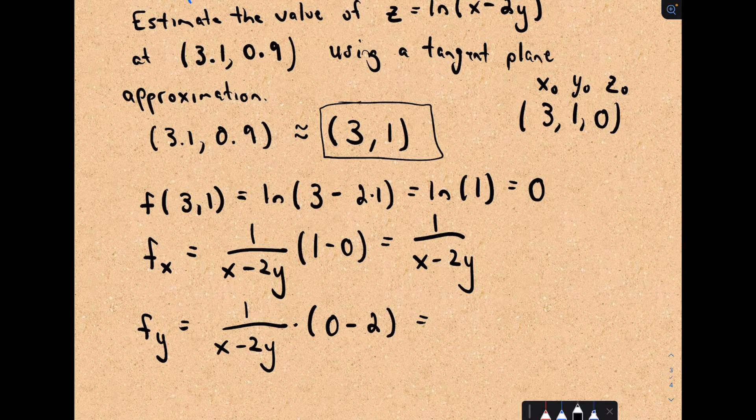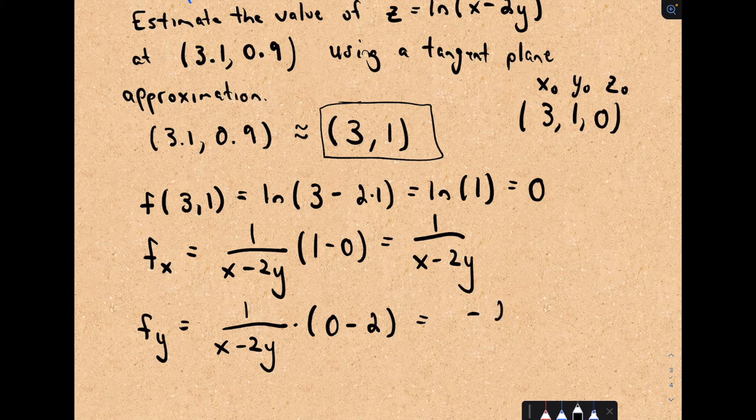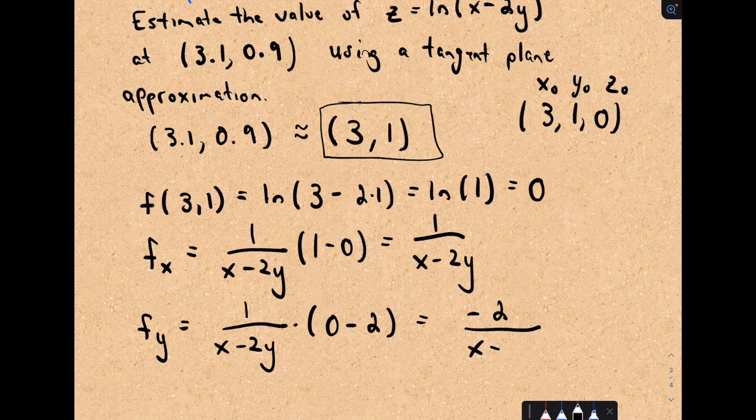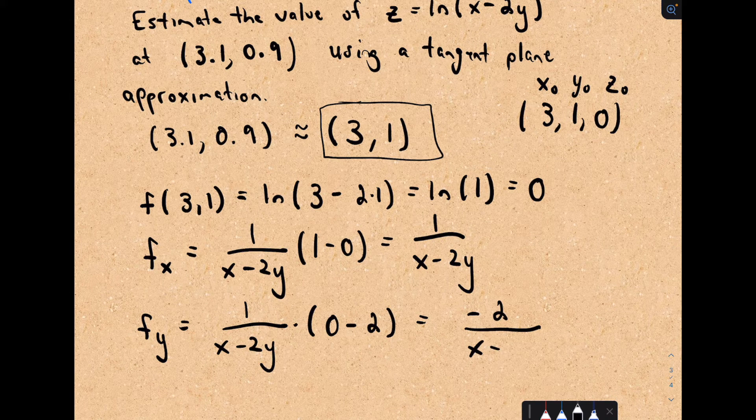And the derivative of negative 2y, that would be negative 2. So almost the same derivative, but now we're picking up this negative 2 as well.